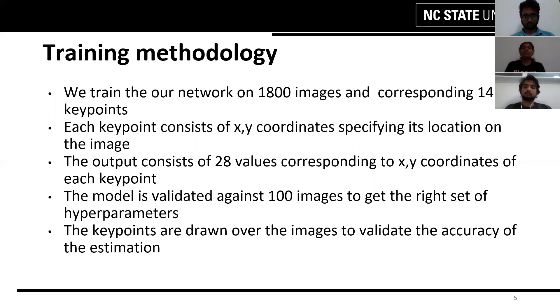In order to train our model, we considered 1800 images and corresponding to these images, there were key points consisting of XY coordinates specifying their location on the image. The output that were obtained consists of 28 values corresponding to XY coordinates of each key point. The model is then validated against 100 images in order to get the right set of hyper parameters.